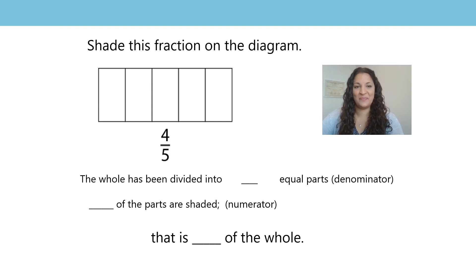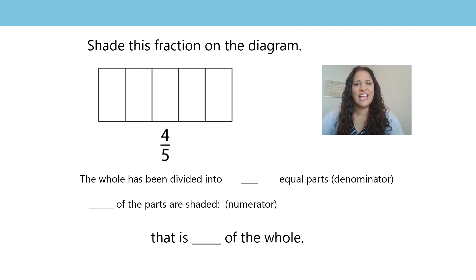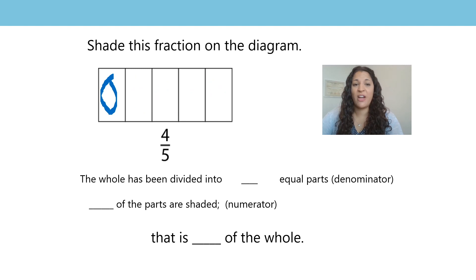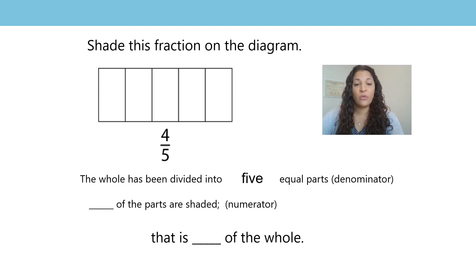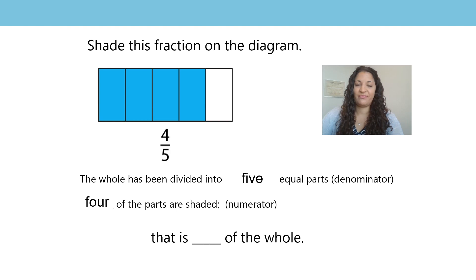Let's do this question together. It says, shade this fraction on the diagram. The fraction is 4 fifths. First, let's count how many equal parts there are: 1, 2, 3, 4, 5. I've counted 5 equal parts, so the whole has been divided into 5 equal parts. Now let's think about how many need to be shaded. If I have 4 fifths, that means 4 of the parts are shaded. That is 4 fifths of the whole. I have shaded in 4 fifths of this diagram.